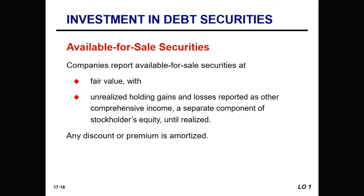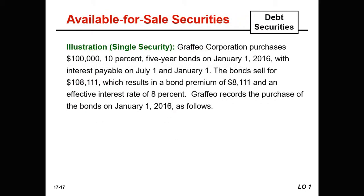Let's take a moment and look at an example illustrating just one security to simplify the concept. Graphco Corporation purchases $100,000 10% five-year bonds on January 1st, 2016. Interest is payable on July 1st and January 1st. The bonds sell for $108,111, which results in a bond premium of $8,111 and an effective interest rate of 8%. Graphco records the purchase of the bonds on January 1st, 2016.